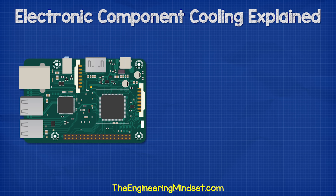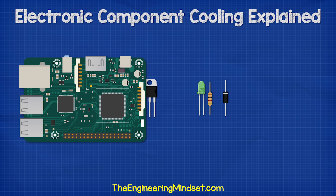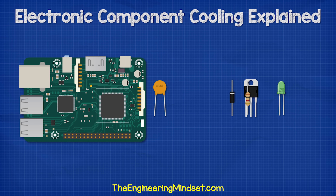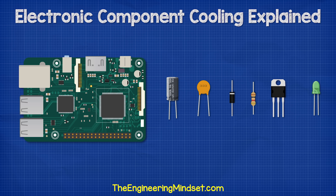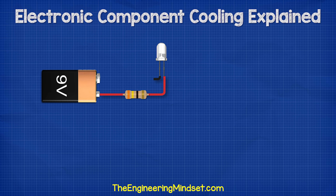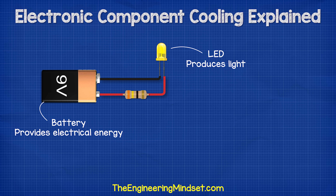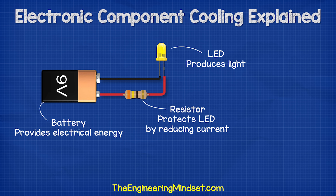All of our electrical devices are built by combining different electronic components together. Each component has a specific function. Take this very simple lighting circuit for example. The battery provides electrical energy. The LED produces light from the energy supplied by the battery, and the resistor protects the LED by reducing the current in the circuit.